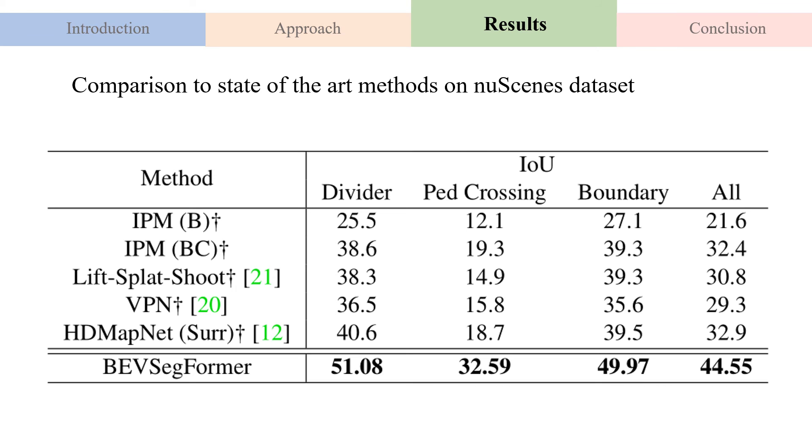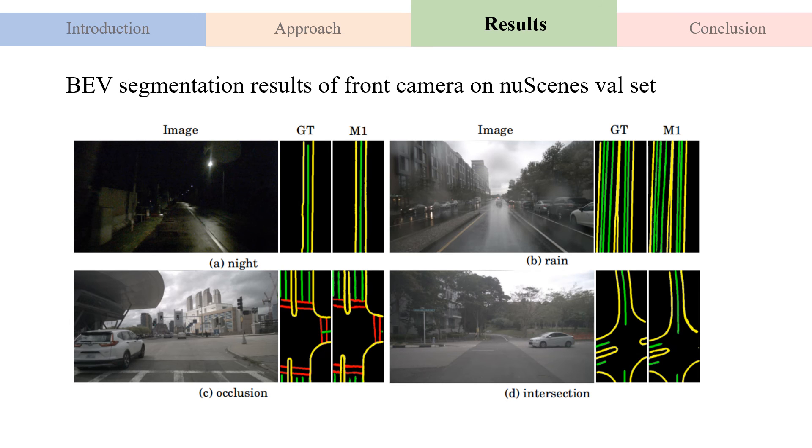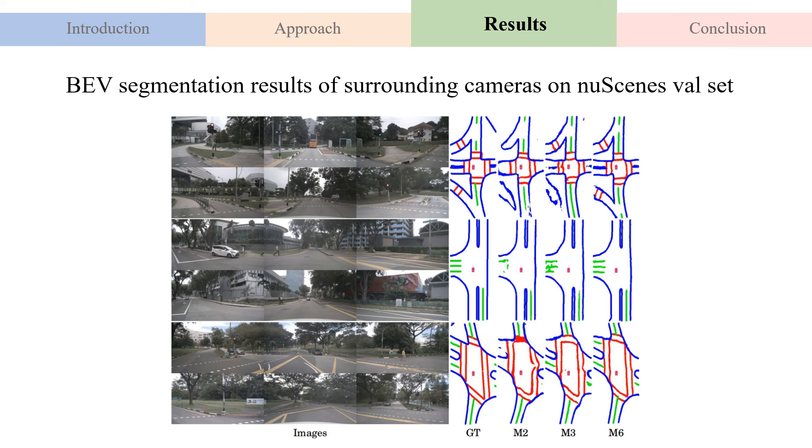Experimental results show that our method outperforms the previous state-of-the-art approaches on the nuScenes validation set. The results are shown here using front camera as input, and our method is able to accurately perform BEV segmentation in various complex scenes. The results are shown here using surrounding cameras as input, which demonstrate the effectiveness of the various components in our approach.